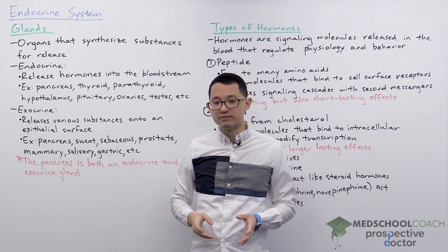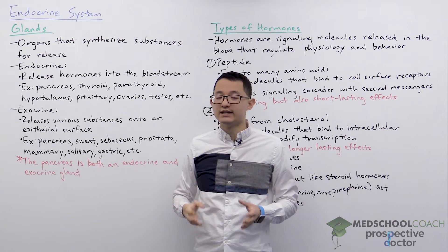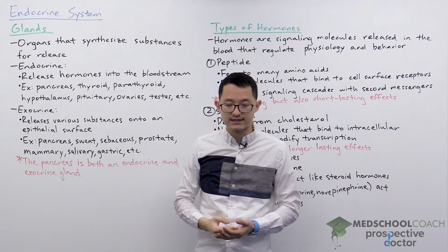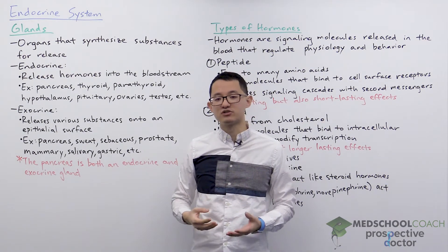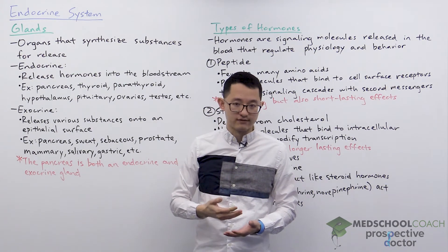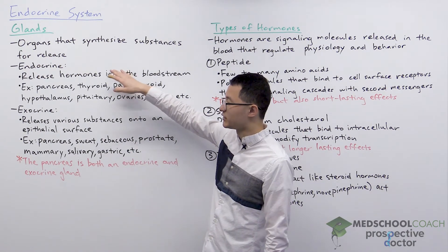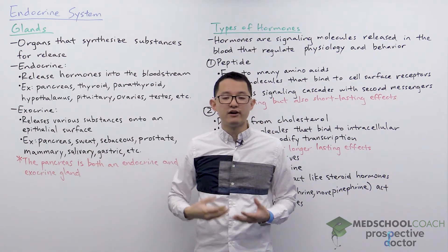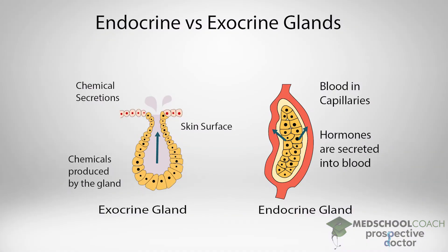We're going to spend a lot more time discussing the endocrine glands since we are going to cover the endocrine system. However, it is important for you to know about the exocrine glands so that you're able to distinguish between them and understand the importance of exocrine glands in physiology. The main distinction between endocrine and exocrine glands is where they secrete their substances. Endocrine glands release hormones into the bloodstream, whereas exocrine glands release various substances onto an epithelial surface.